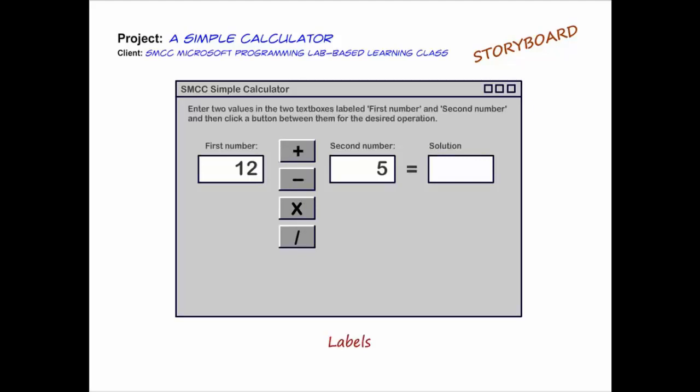And then a third type of object I'm going to add are labels. Labels are static text. The user can't change the text in the label, though our program can. So in code, we can write it in such a way that it will change the display in a label object or a label control. So here I'm using labels simply to provide some instructions to the user and also then to label what the different text boxes are.